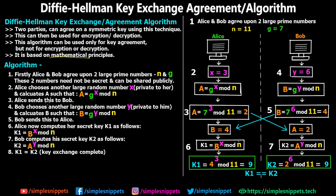Step three: Alice sends her newly calculated value A = 2 to Bob over the insecure network. A third person could read this value, but ultimately the key will remain private. Step four: Bob chooses his own large random number Y = 6, which is private to him, and calculates B = G^Y mod N = 7^6 mod 11 = 4. Step five: Bob sends B = 4 to Alice over the insecure network. Now Alice has B = 4 and Bob has A = 2.